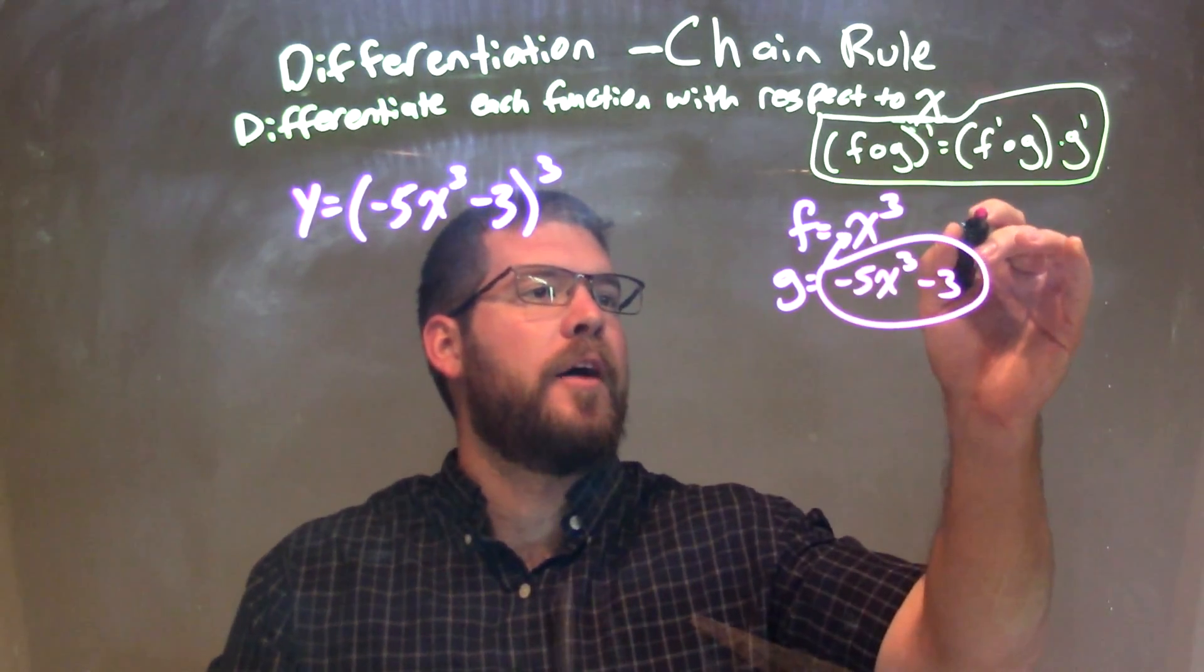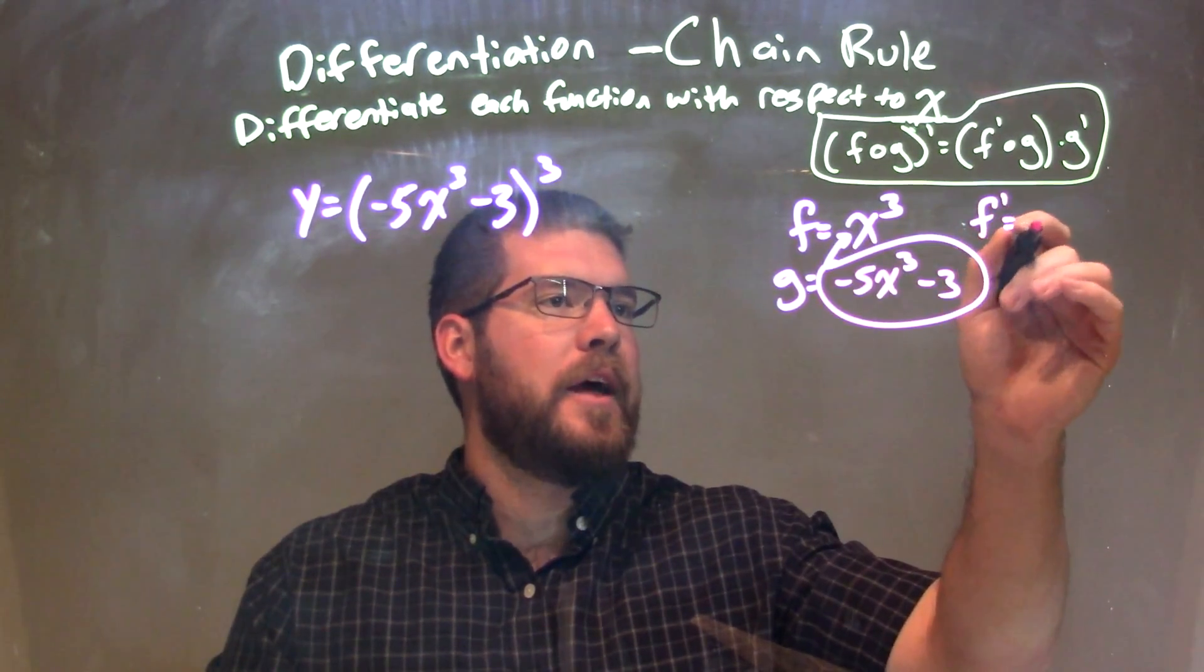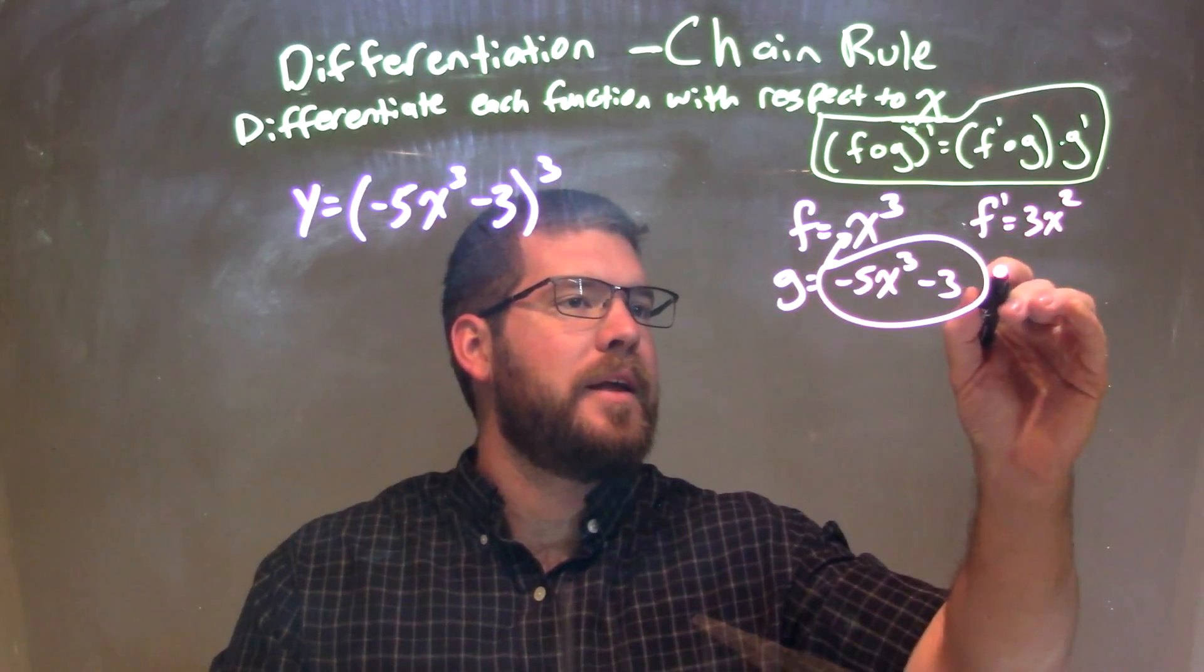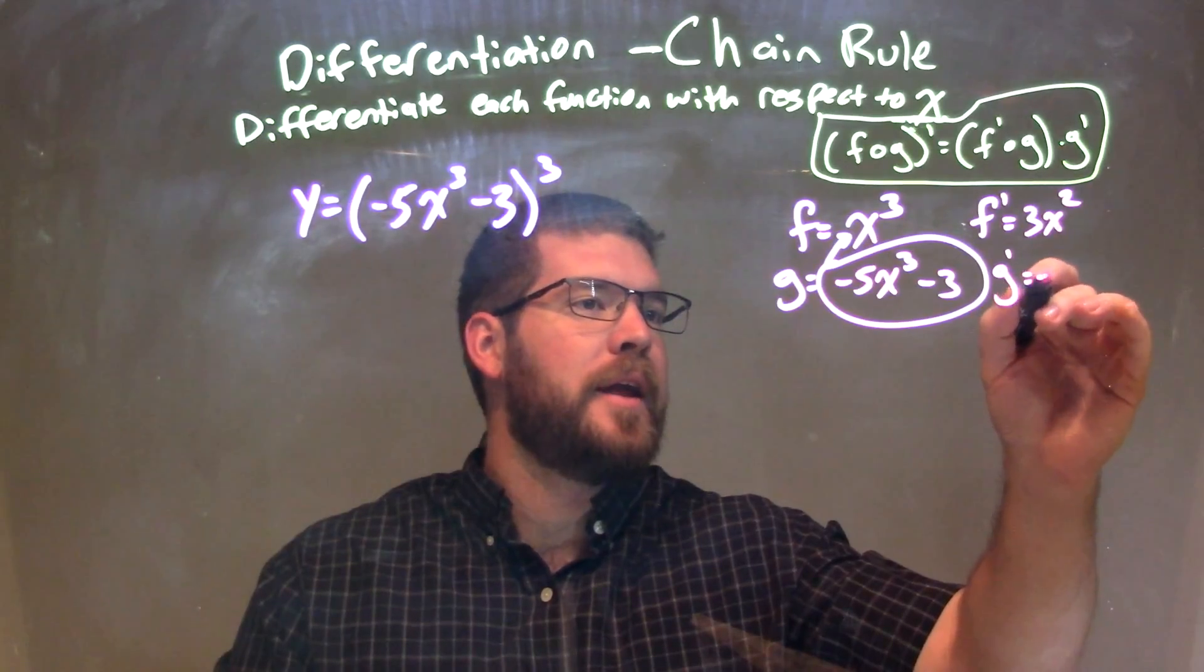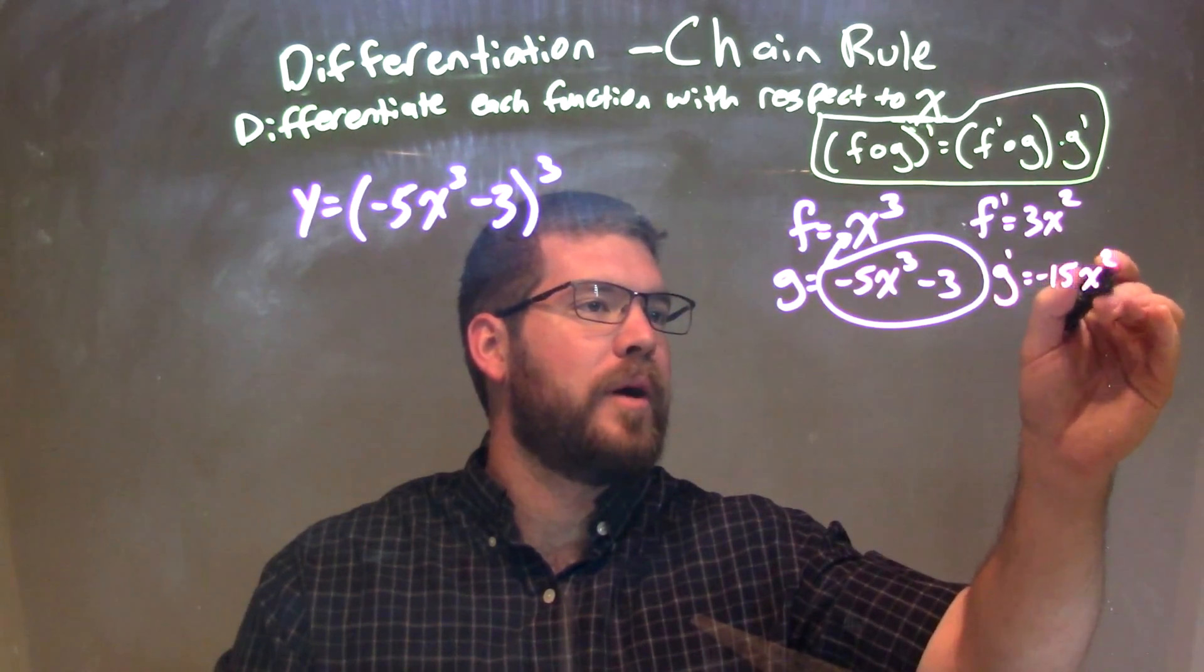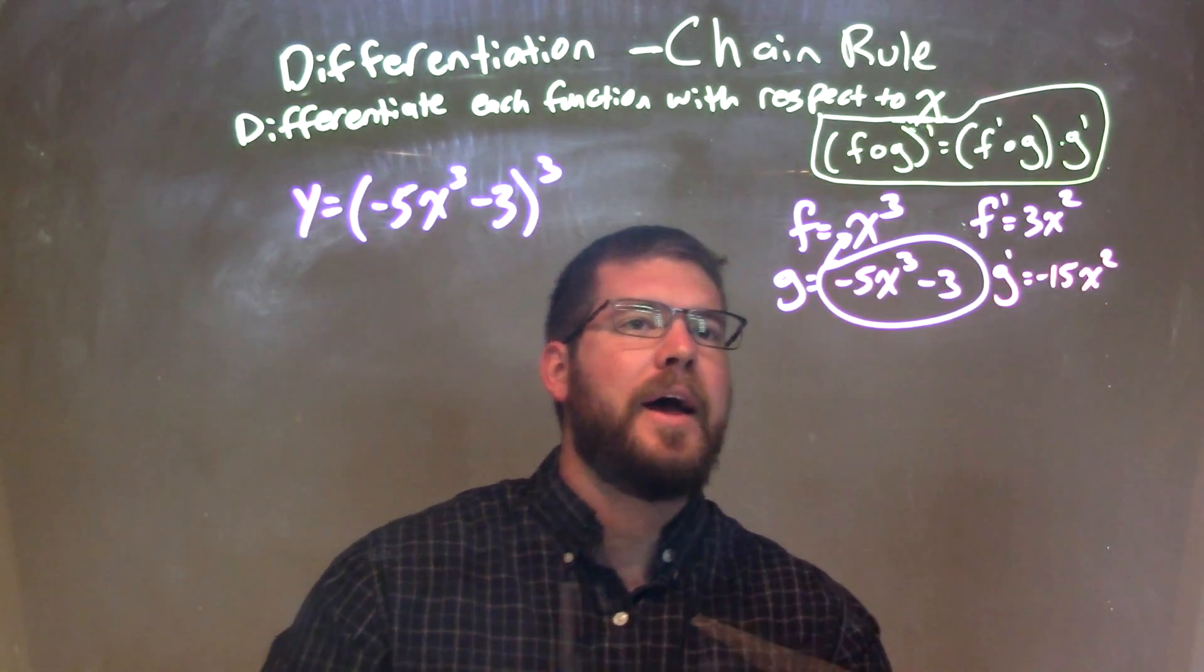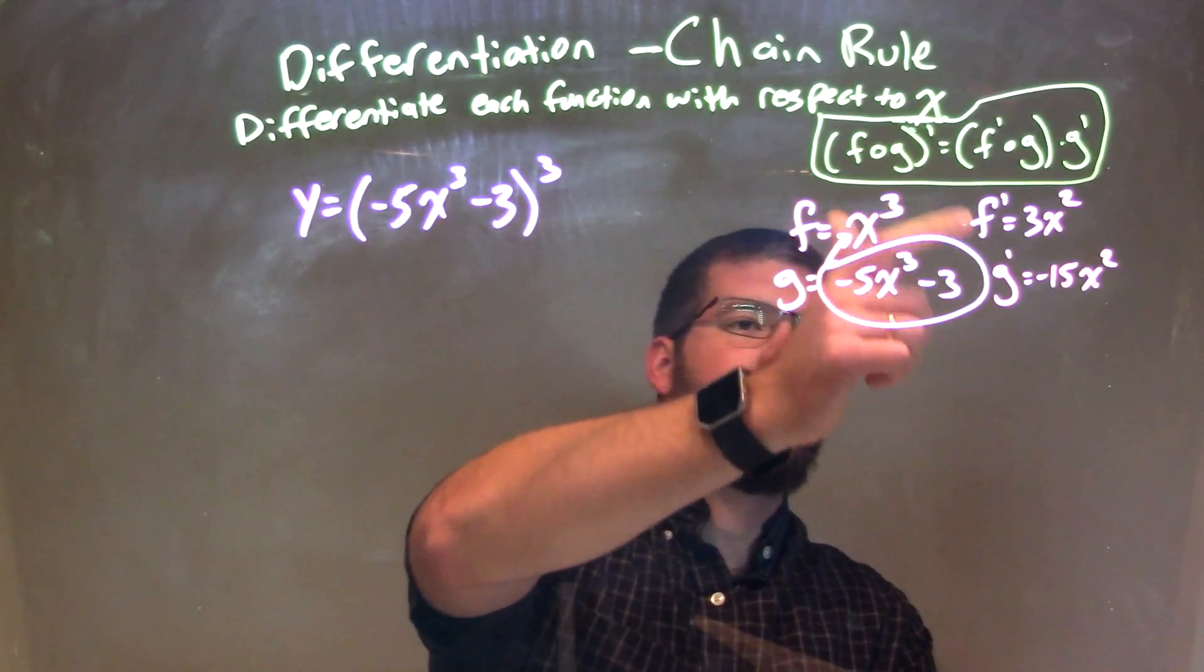So now I'm going to find f prime, and f prime is 3x squared. And g prime is negative 15x squared. Now I have my f and g, my f prime and g prime.